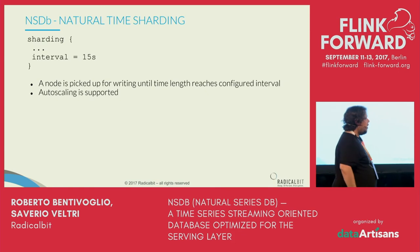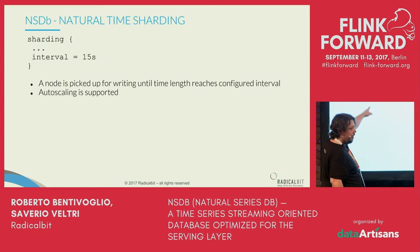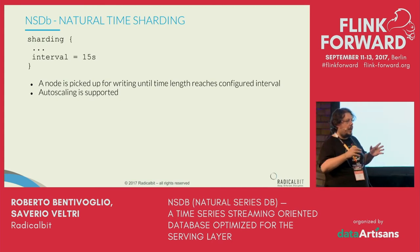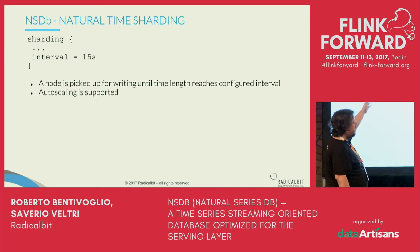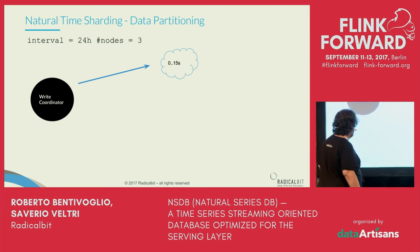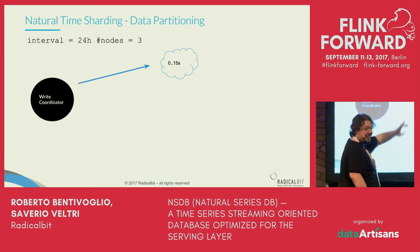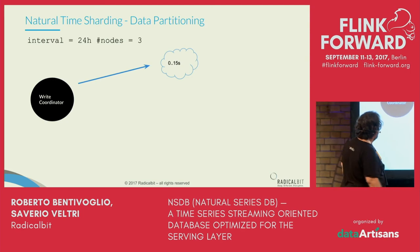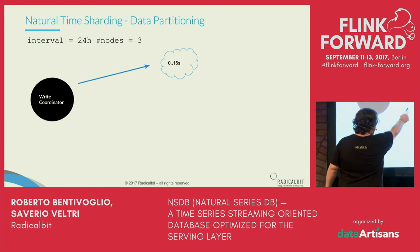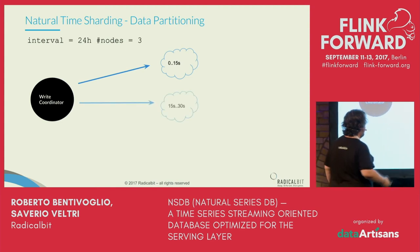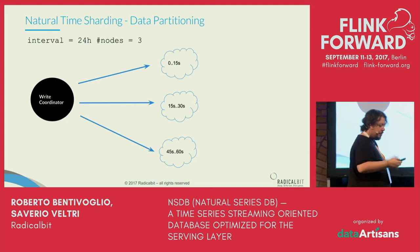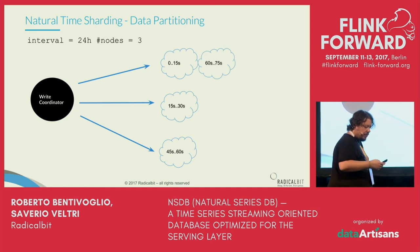It's enough to configure one parameter — the interval. The interval means that every shard contains a chunk of data from a starting timestamp to that timestamp plus the interval. For example, with an interval of 15 seconds and three nodes, with a continuous flow of time-series data: the first node receives data from 0 to 15, the second node from 15 to 30, and so on. Once all available nodes are reached, we start again from the first node.